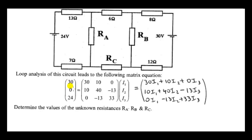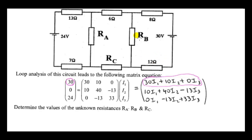We compare entries. This 3-by-1 matrix must be identical to the matrix on the other side. So we can see that 30 must equal this expression. We are talking about a voltage source of 30 volts, so the first equation must refer to this loop of the circuit — this is where the 30-volt source is.